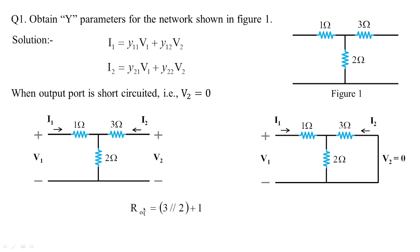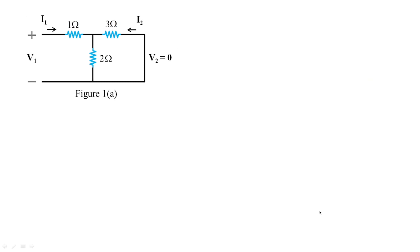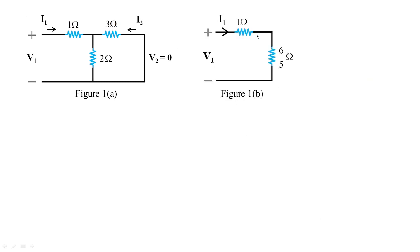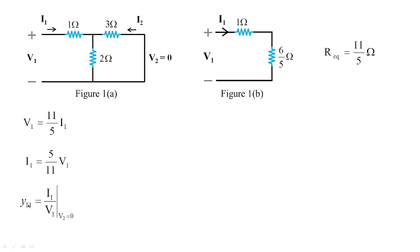First, we estimate R equivalent looking from the input port. The 3 ohm and 2 ohm resistors are in parallel, and that is in series with 1 ohm, giving 3 into 2 divided by 3 plus 2, plus 1, which equals 6 by 5 plus 1, or 11 by 5 ohms. So V1 equals 11 by 5 times I1, meaning I1 equals 5 by 11 times V1. This gives the input admittance Y11 equal to I1 by V1 at V2 equal to 0, which is 5 by 11 Siemens or 0.45 Siemens.